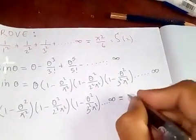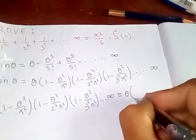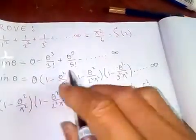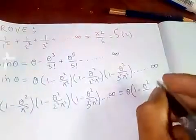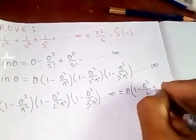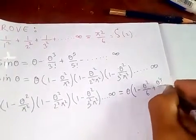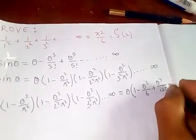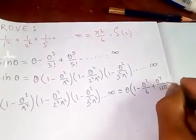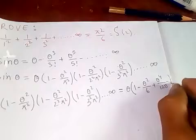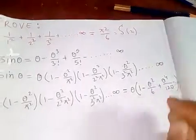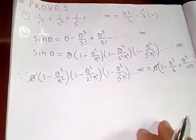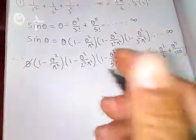We can cancel θ from both sides. After dividing by θ, we get (1 - θ²/π²)(1 - θ²/2²π²)(1 - θ²/3²π²)... equals 1 - θ²/6 + θ⁴/120 - and so on.